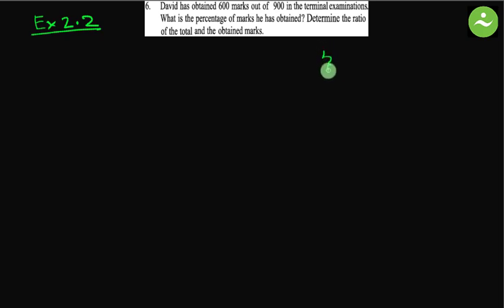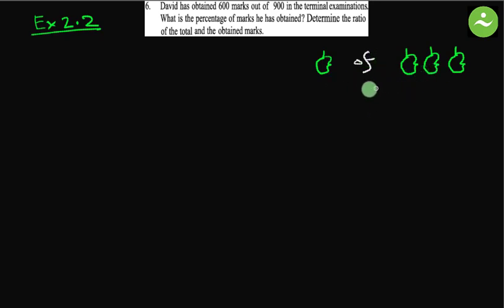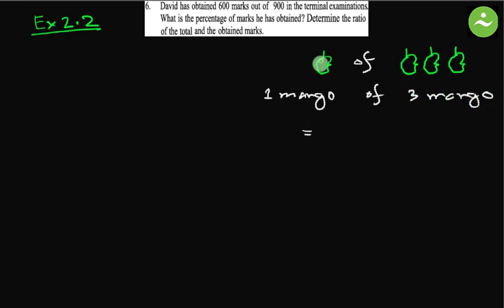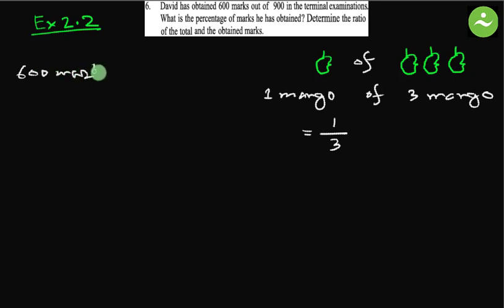Just to make you understand, let me draw mangoes. This is one mango, this is two, and this is three. So if I say one mango of three mangoes — one mango of three mango means one is one-third of three. So one mango of three mango means one by three. Similarly, we can say six hundred marks of nine hundred marks.